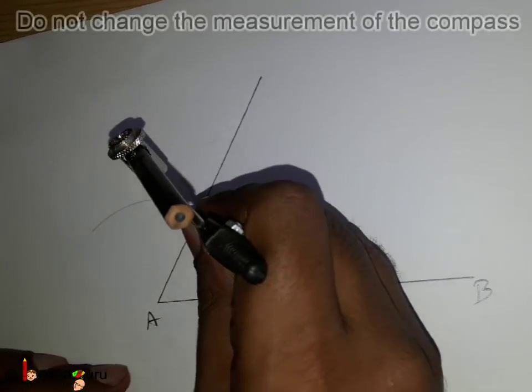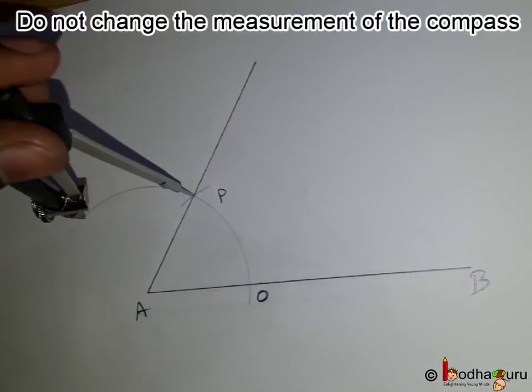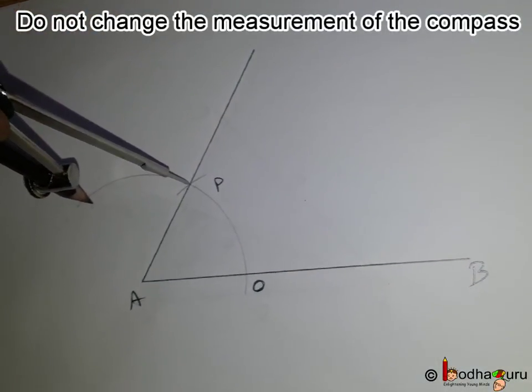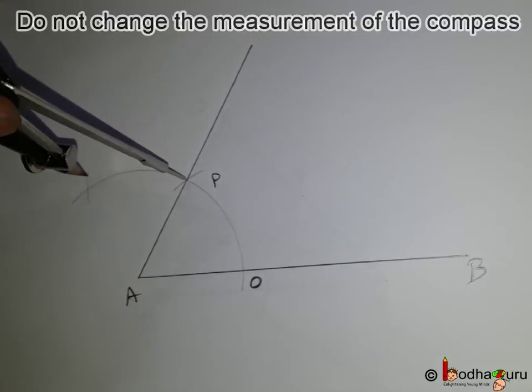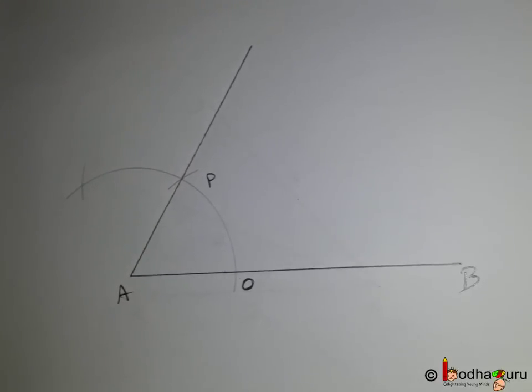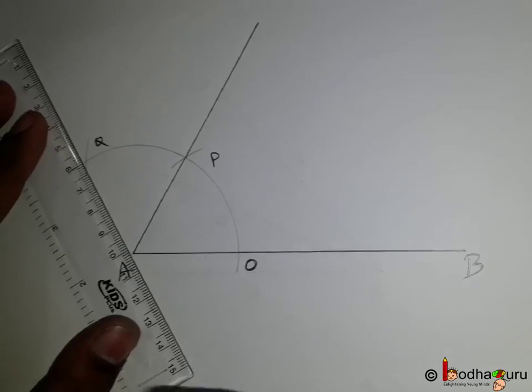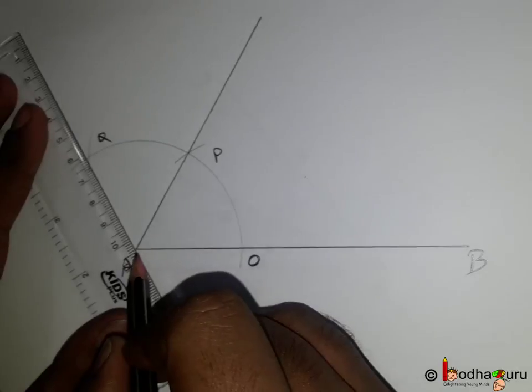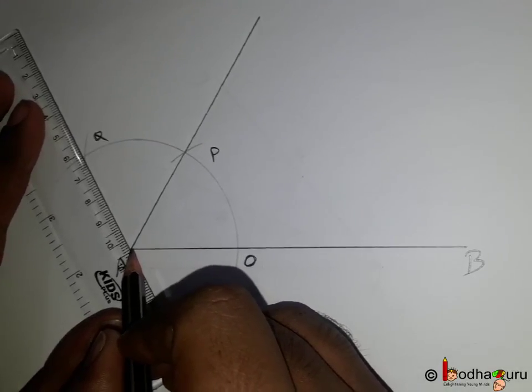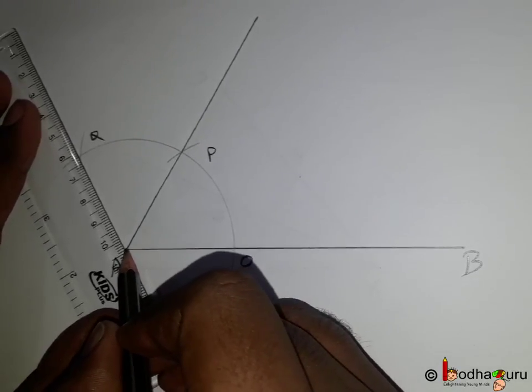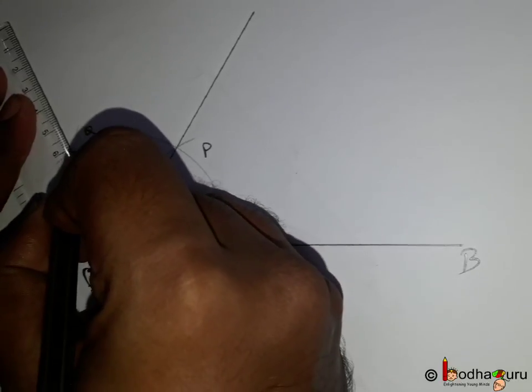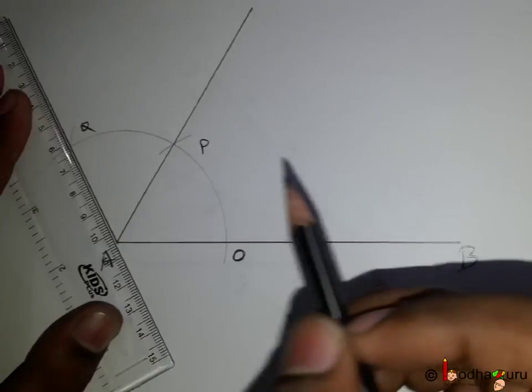Now, if we put the needle of the compass on point P and make another arc such that it intersects or makes a cut on the previous arc at point Q, then joining AQ would give us 120 degrees. And we can say angle BAQ is equal to 120 degree.